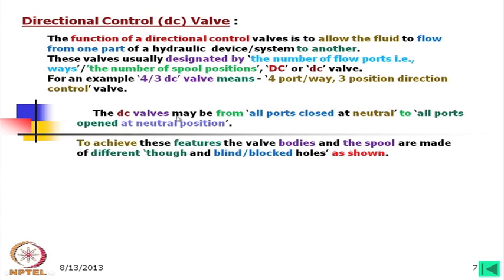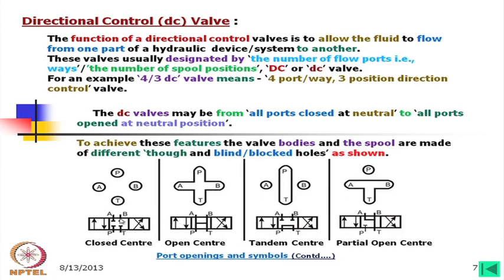In most valves there is a neutral position. To achieve these features, the valve bodies and spools are made with different through and blind or blocked holes. Looking at the leftmost figure, this is a 4 by 3 closed-center DC valve. At neutral position, these 4 ports are closed or blocked.